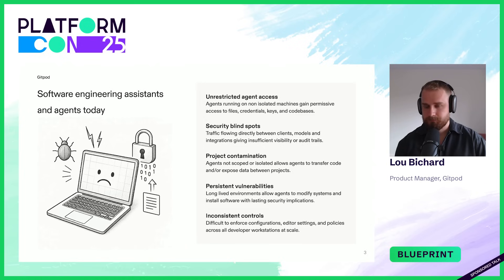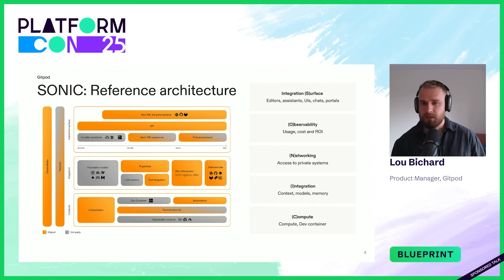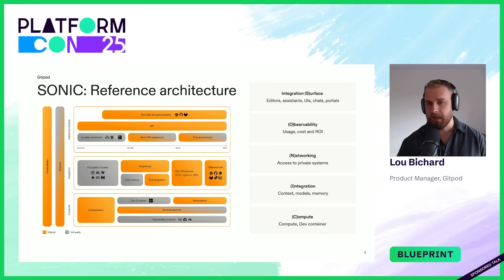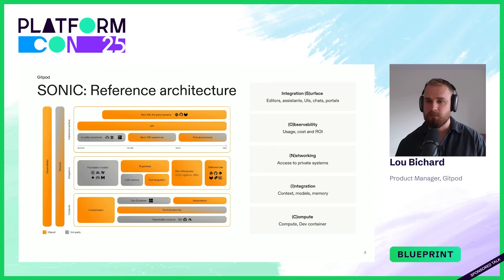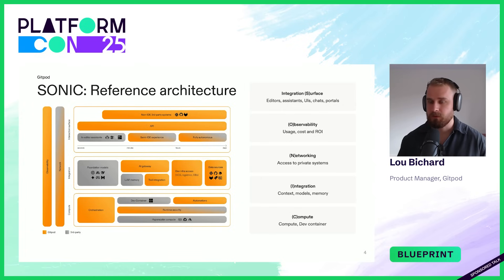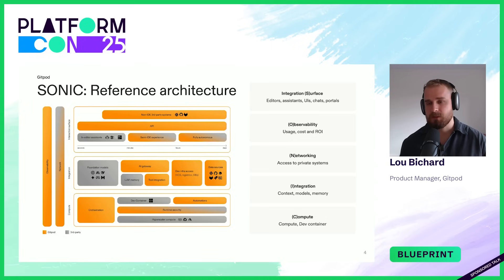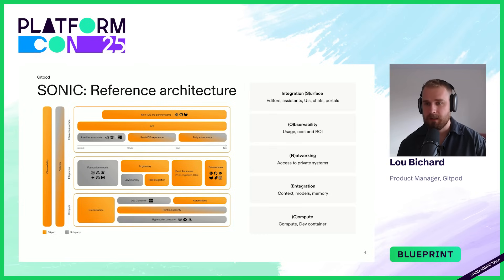Let's talk about the Sonic architecture. This is an architecture we discuss a lot with our customers — it's a high-level ecosystem map of the different components you want in place for AI and developer productivity. We break this down into five areas. The first is integration surface area: what your developers or end users are interacting with — editors, AI editors like Cursor, or assistants like Copilot, whether through UIs, chat interfaces, or portal plugins that are starting to have AI capabilities.